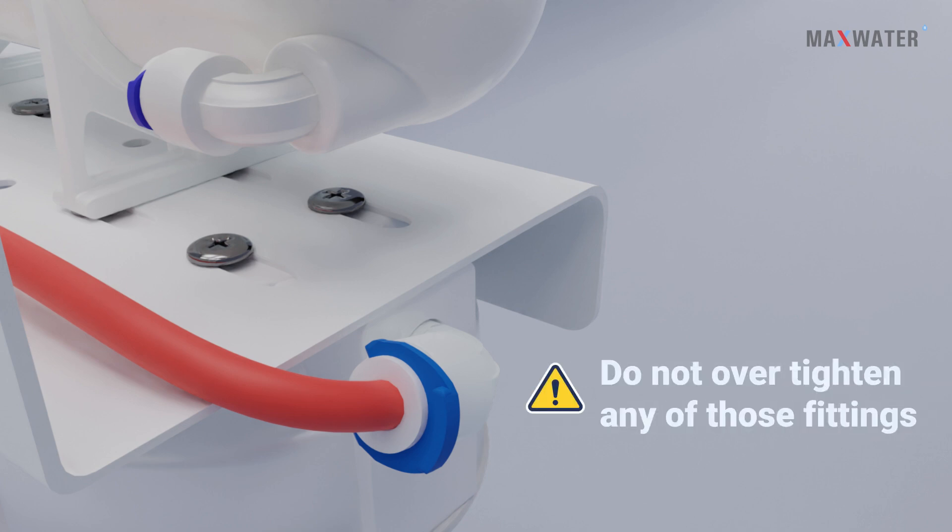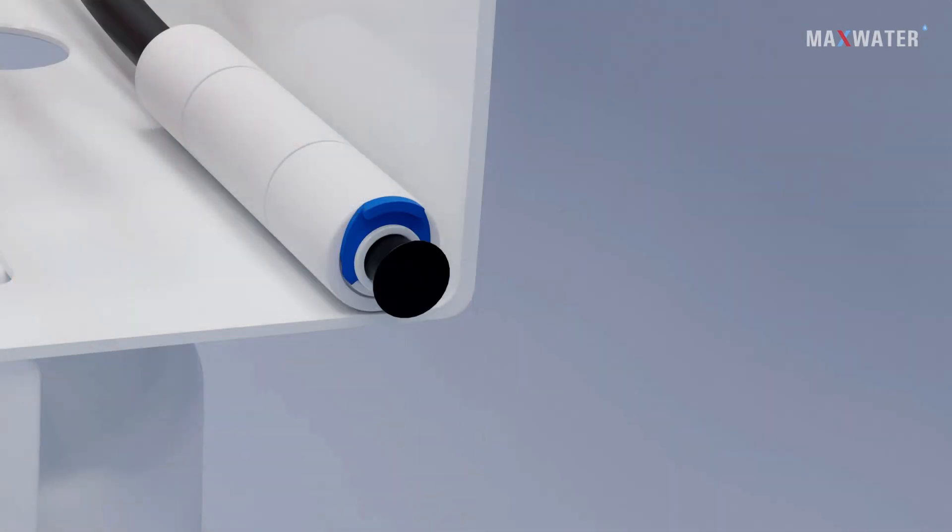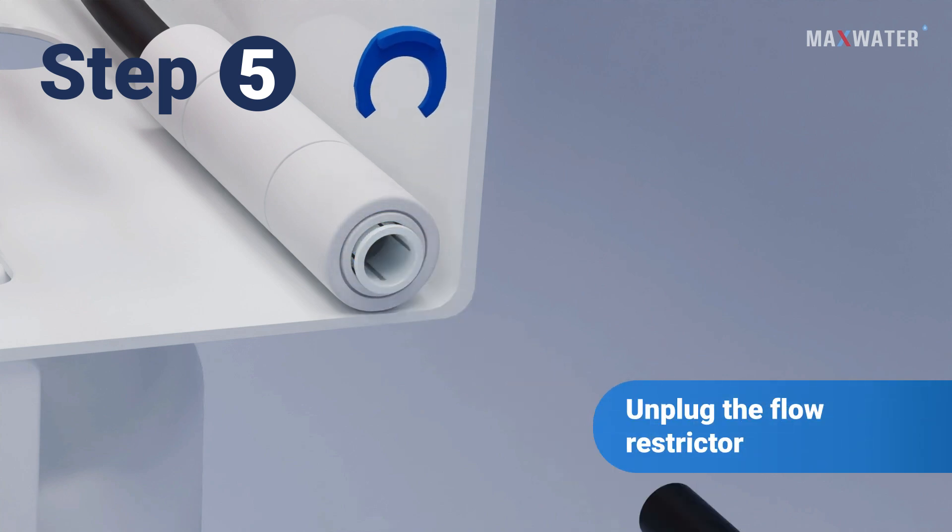Step five: now unplug the flow restrictor, take the black tube that's connected to the drain saddle, and put it through the flow restrictor.